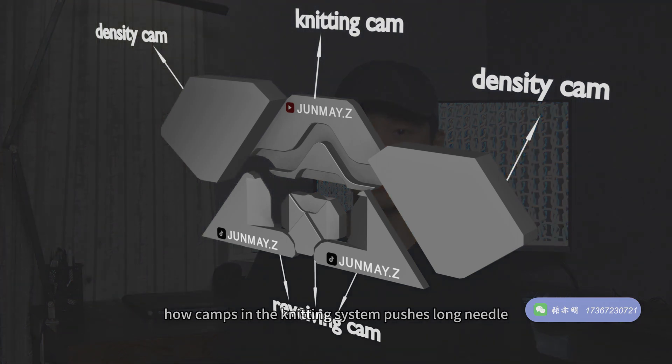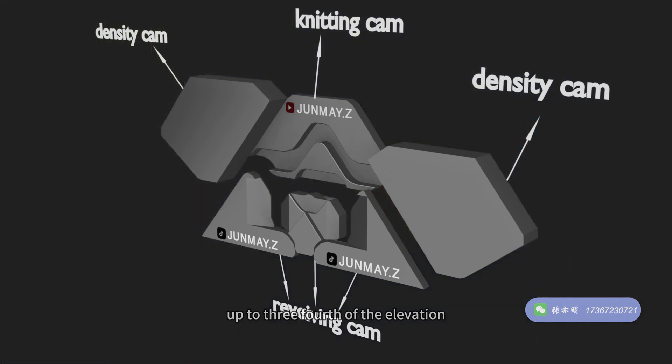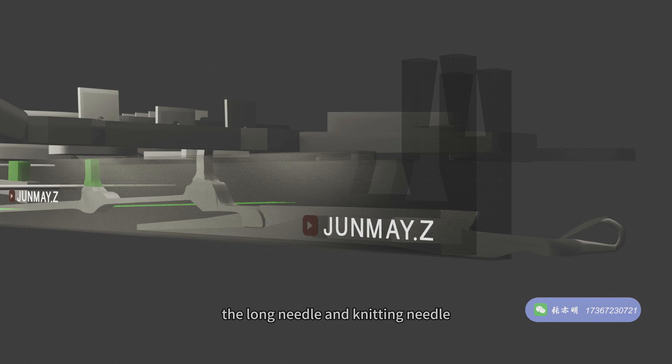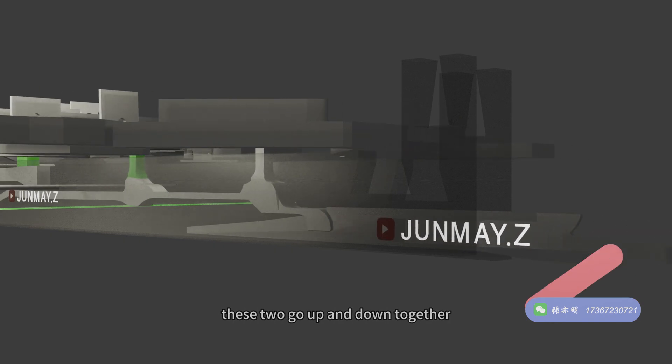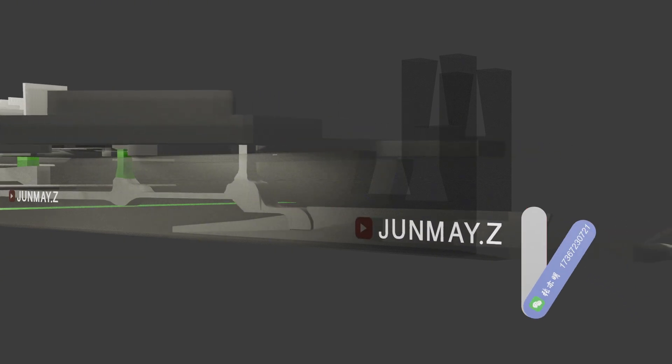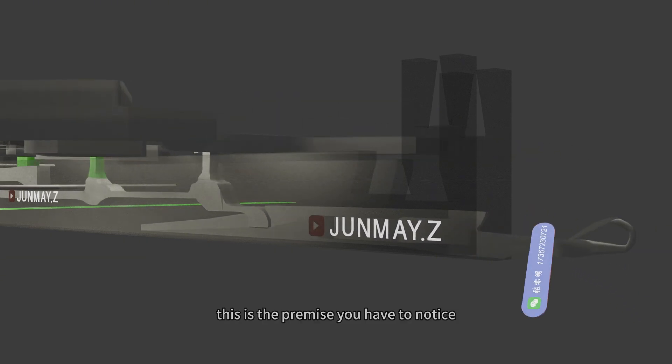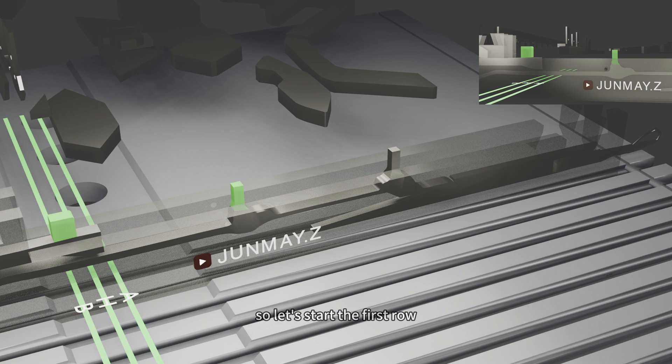Now let's check out exactly how the long needle and the knitting needle are pushed to carry out the knitting action — how cams in the knitting system push the long needle up to three-fourths of the elevation for a needle to knit. For the long needle and knitting needle, these two go up or down together. This is the premise. So let's start the first row.